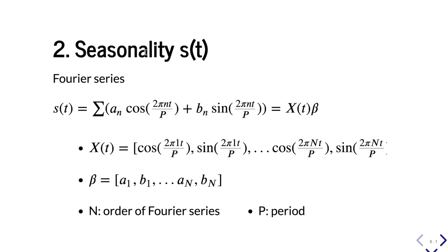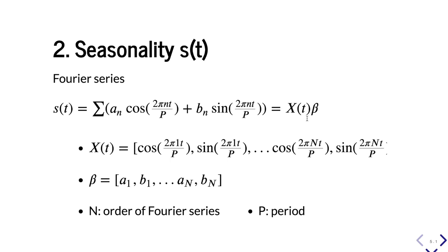The second component of the time series model is the seasonality, S(t). It is modeled based on the Fourier series, which is a combination of weighted cosines and sines. This can be written as X(t) beta, where X(t) is a vector of cosines and sines, beta is a vector of weights, and N represents the order of the Fourier series — basically, how many cosines and sines you want in your model.